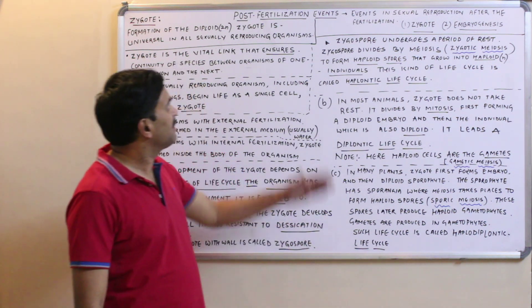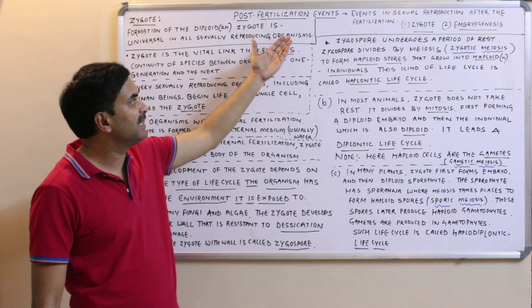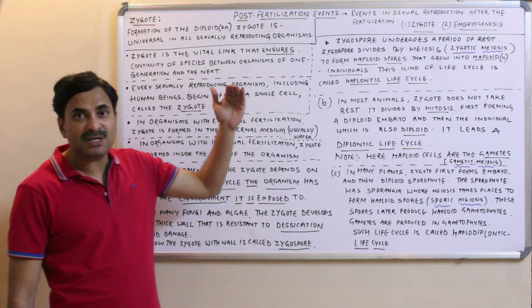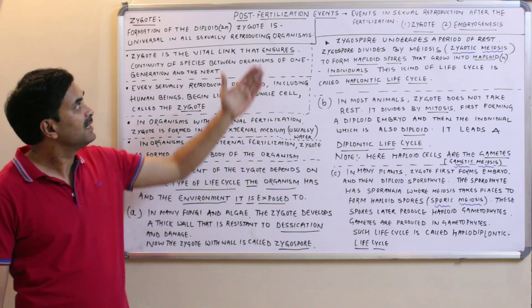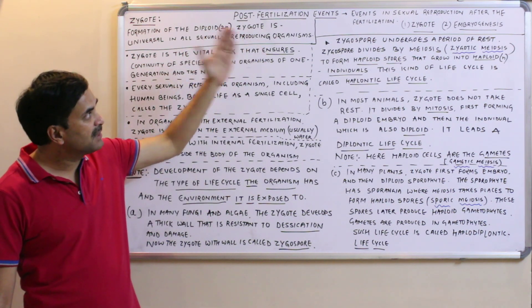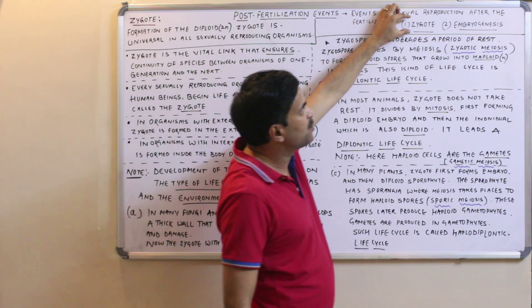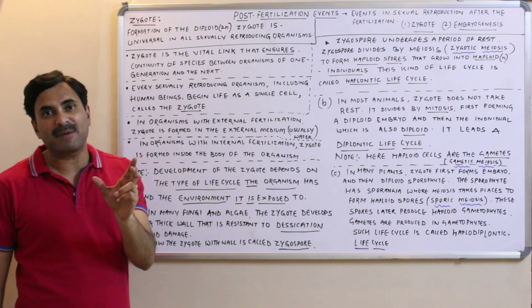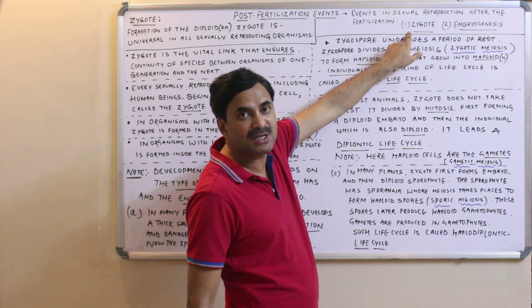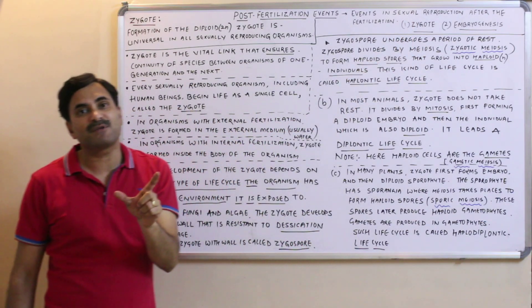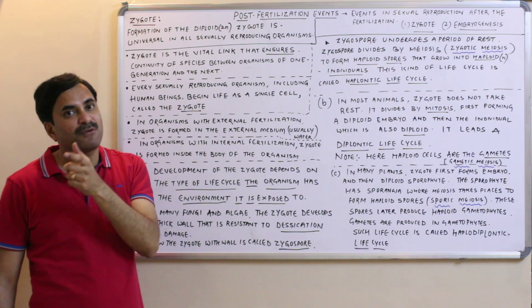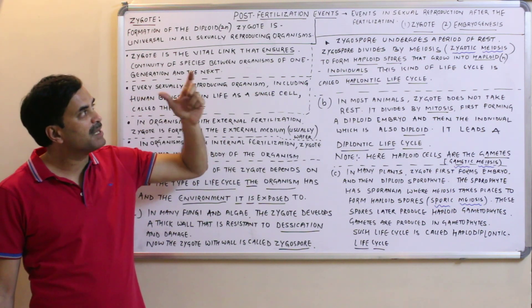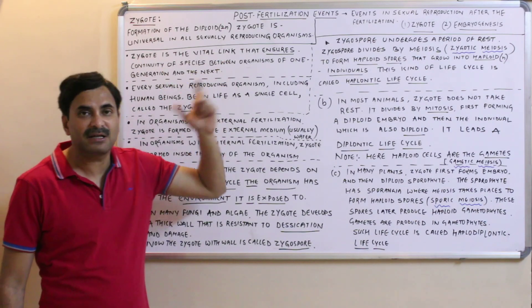Today we will study the post-fertilization events. Events which occur after fertilization in sexual reproduction are called post-fertilization changes. In this category we study the zygote and embryogenesis. Because of fertilization, gametes fuse and a diploid structure called the zygote is produced. After zygote formation, the embryo develops — this development is called embryogenesis. So the two major events are the zygote and embryogenesis.